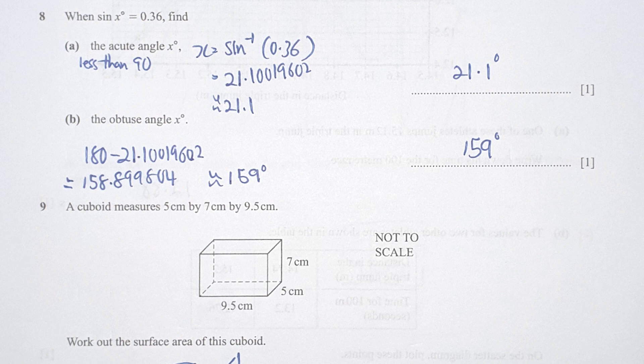For question 8, acute angle x indicates that it is less than 90 degrees. So x equals sine inverse of 0.36, which is 21.1 after correcting it to three significant figures.